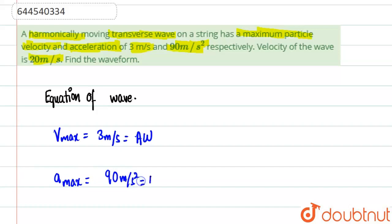Similarly, a_max, which is maximum acceleration, is given as 90 m/s². It is also denoted as A·ω². So if we consider these two equations, name it one and name it two, we do two divided by one.